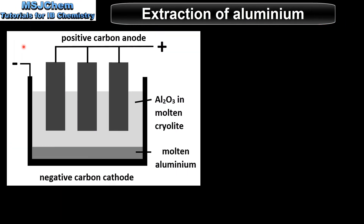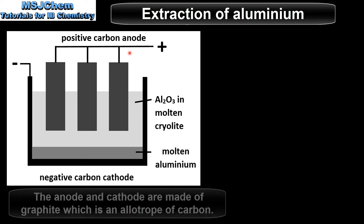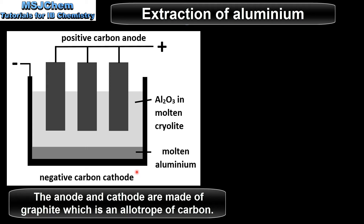This diagram shows an electrolytic cell used in the electrolysis of alumina. As we saw in the previous slide, the electrolyte is alumina in molten cryolite. Both the anode and cathode are made of carbon.